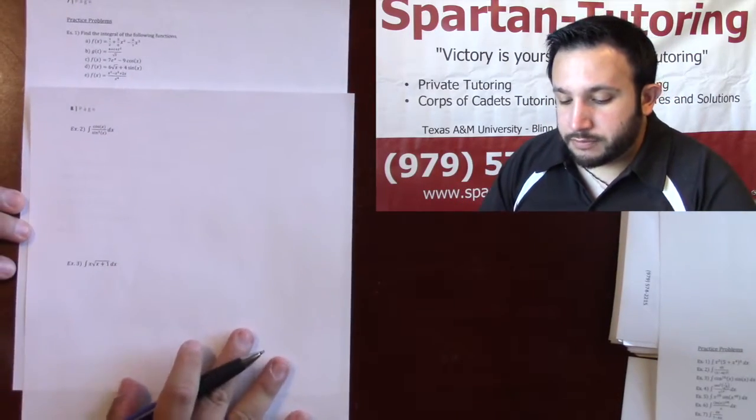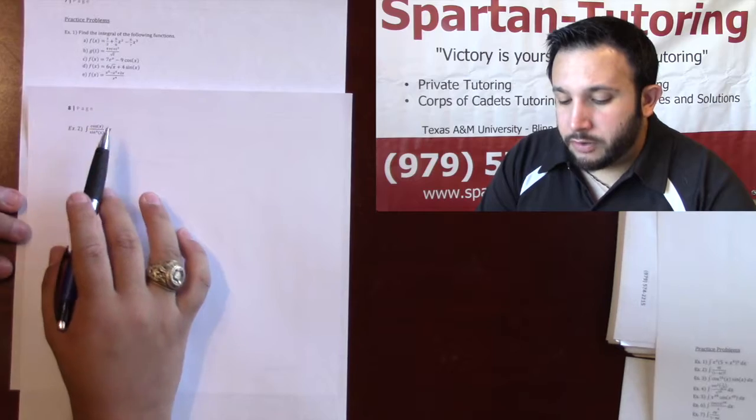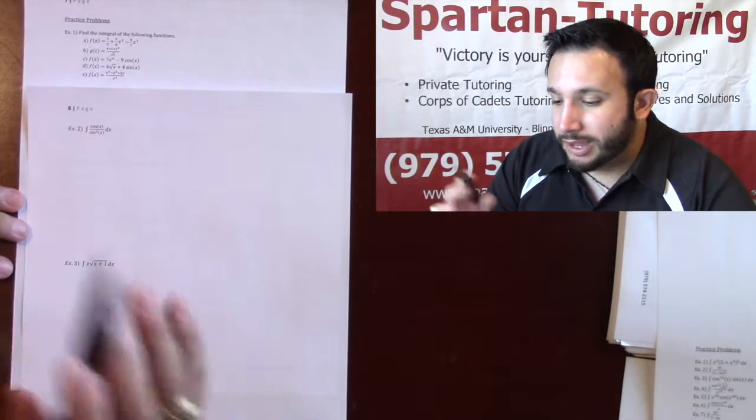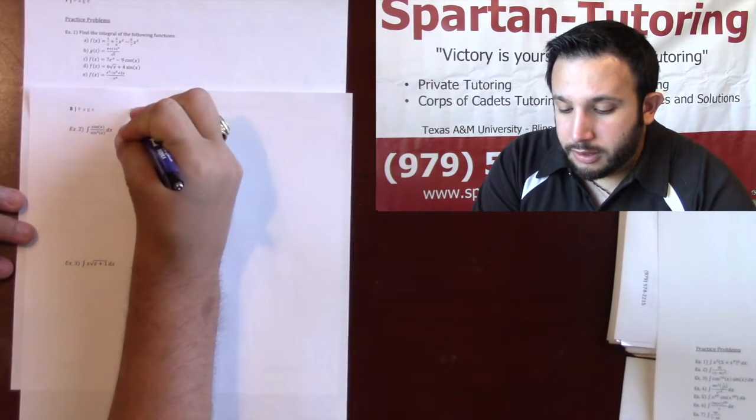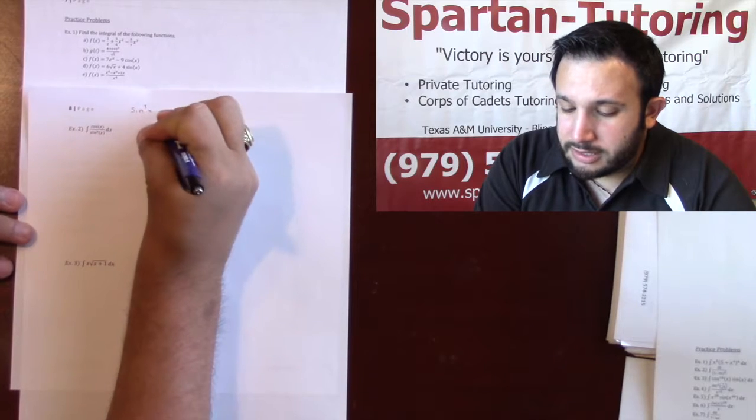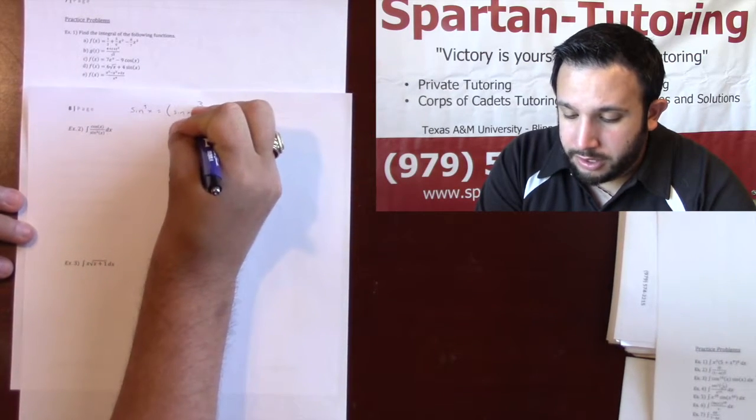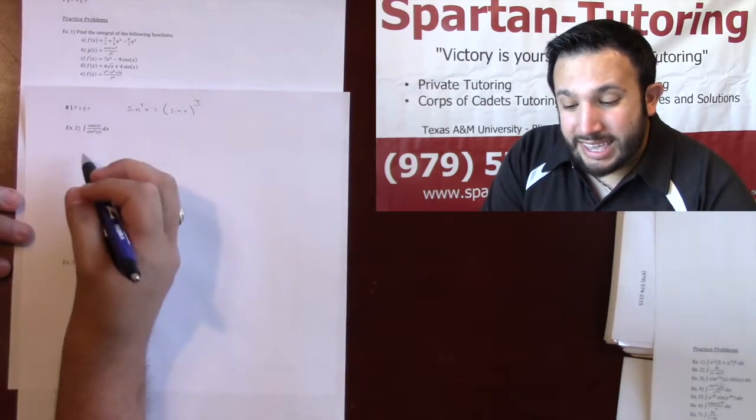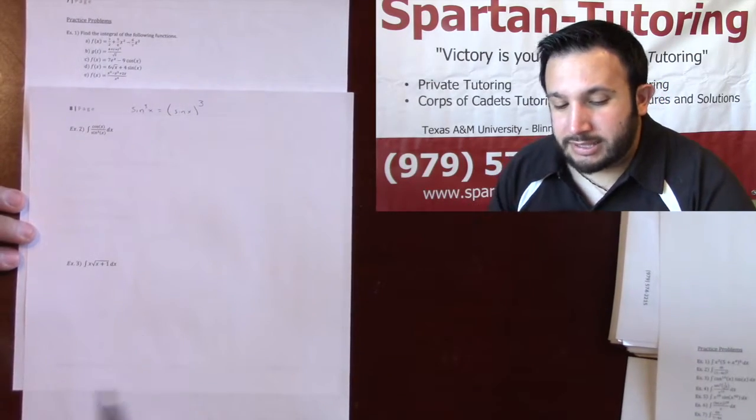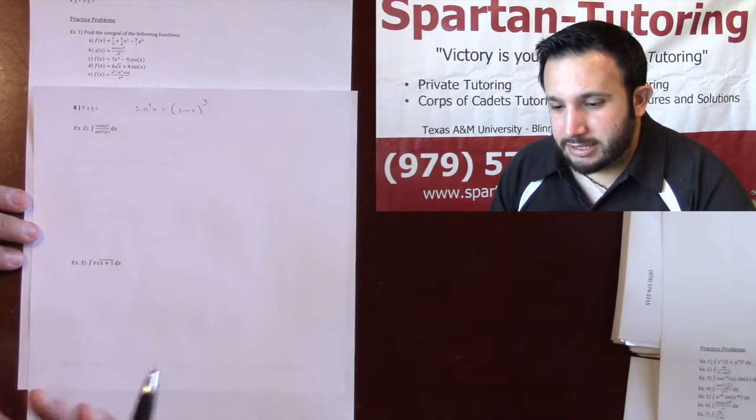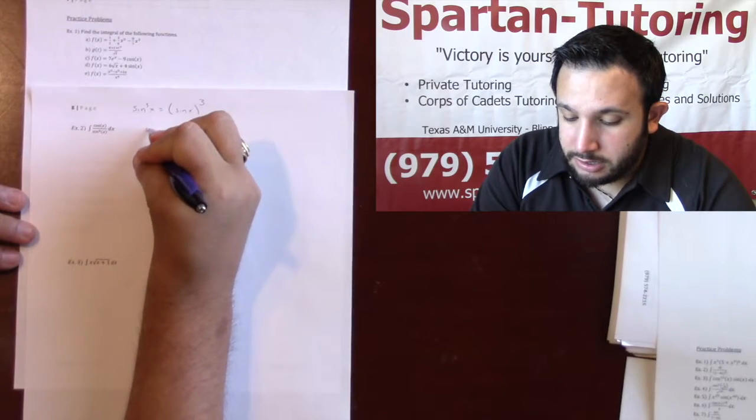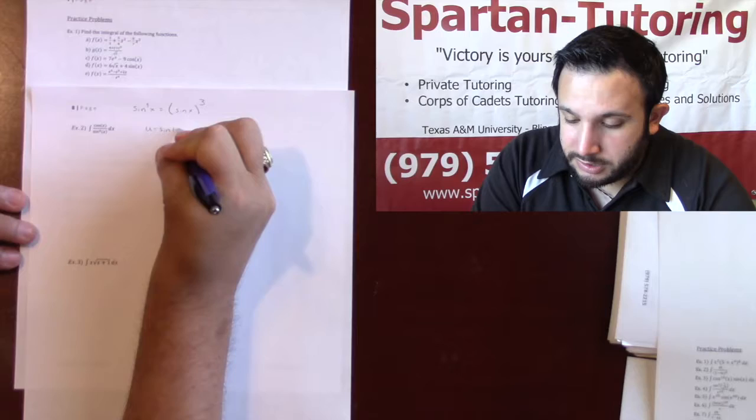Let's take a look at this one, number two. I'm going to do the integral of cosine divided by sine cubed. As an algebraic note, sine cubed x is equivalent to sine x, the whole thing cubed. In this case, sine is actually my inside function. Sine is inside of something else, so I'm going to set u equal to sine x.